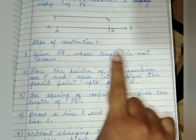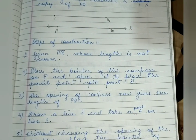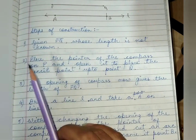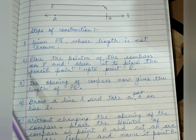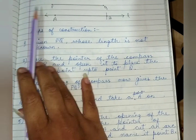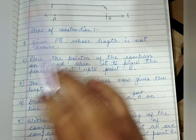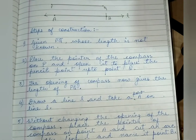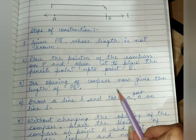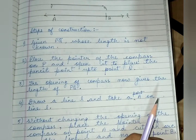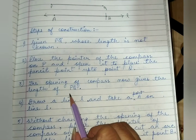What are the steps of construction? Given PQ whose length is not known — we have drawn PQ whose length we do not know. Then place the pointer of the compass on P and open it to place the pencil point up to point Q. The pencil point of the compass now gives the length of PQ.